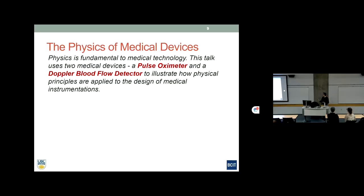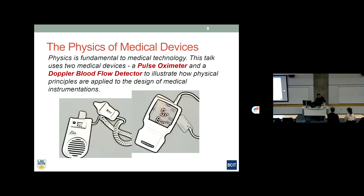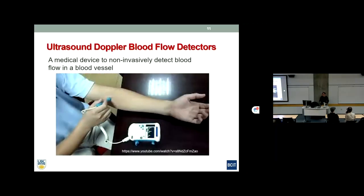Now, getting back to what I was asked to do: talk about physics in medical devices. I brought two devices — a pulse oximeter and a Doppler blood flow detector — and I'm going to talk about their applications and a little bit about the physics behind them. The first device is a Doppler ultrasound detector.